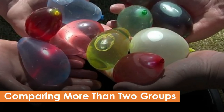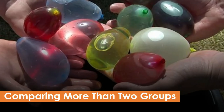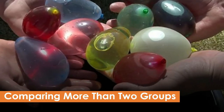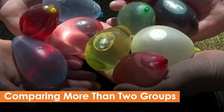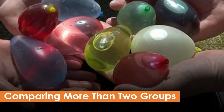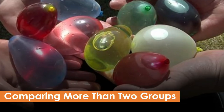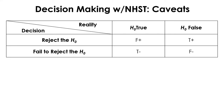Before we talk about this F-test, we will have a bit more discussion about the caveats of playing the game of null hypothesis significance testing. I hope you get the hang of playing the game with t-test, but because of the way we play this game, there are some things to consider when we make a statistical decision with NHST.